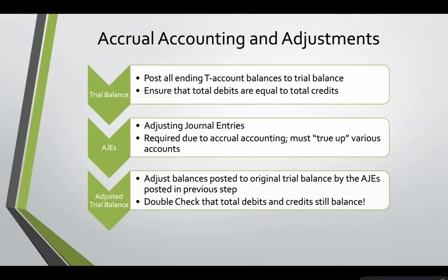At the end of a period we will complete our next step, which is adjusting journal entries. These are required due to accrual accounting, which is required by GAAP. All adjusting journal entries have either a revenue or an expense, and they will have an asset or a liability.